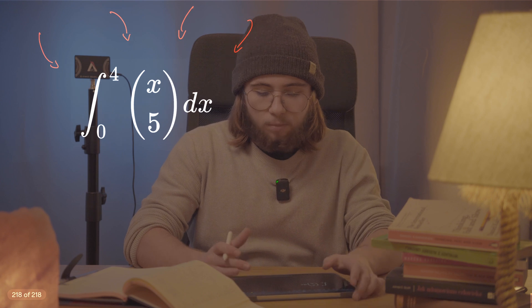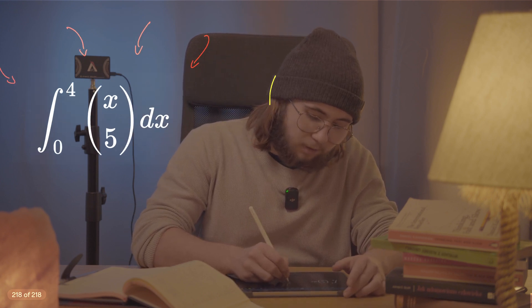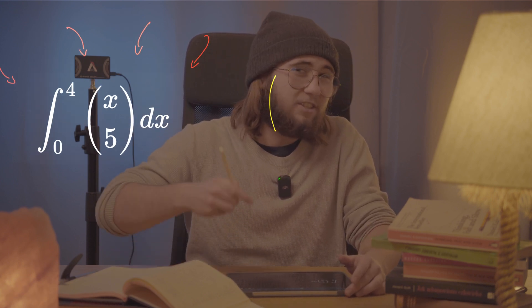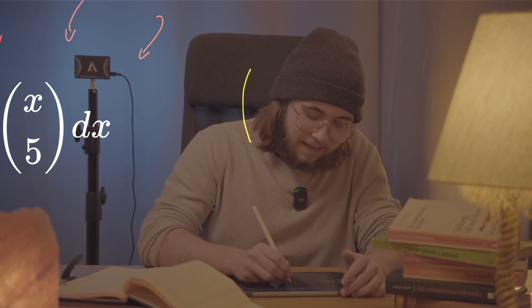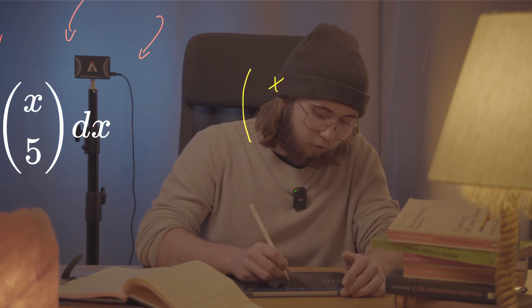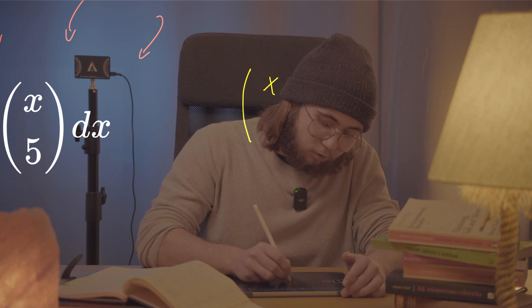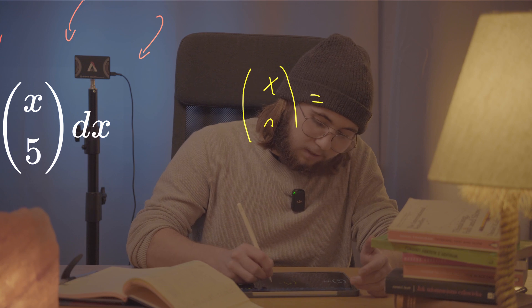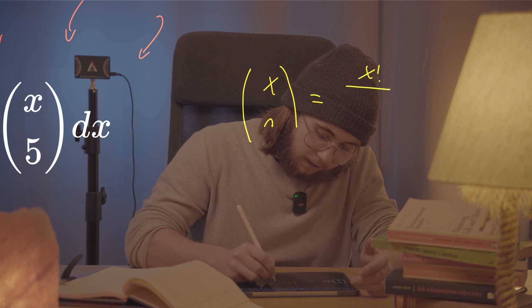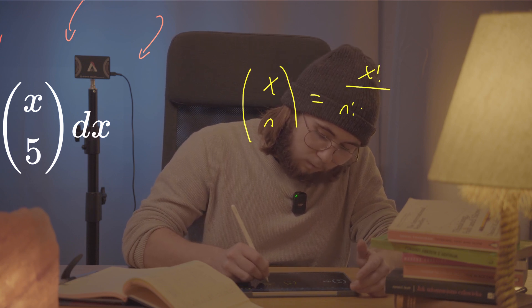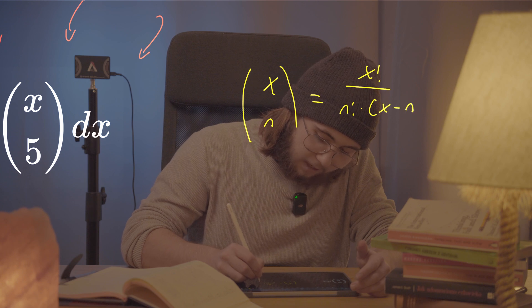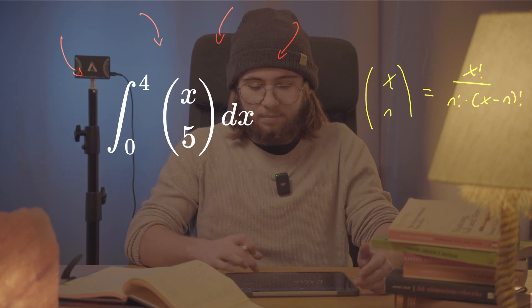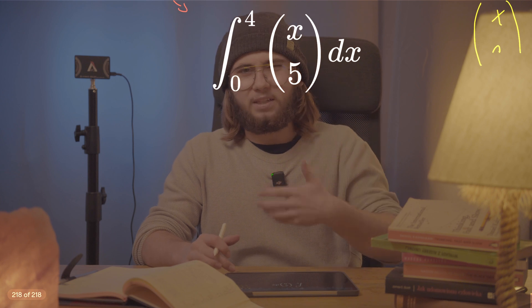Well, this is just the binomial coefficient. It is called x choose k because it also has something to do with combinatorics. I will do a video about it for sure. But basically, x choose some kind of an n, let's say, is just going to be equal to x factorial divided by n factorial multiplied by x minus n factorial. Also shows up in the binomial theorem, all of that stuff.